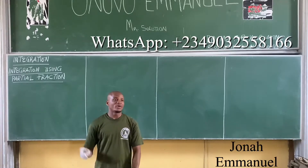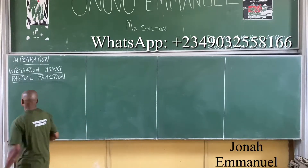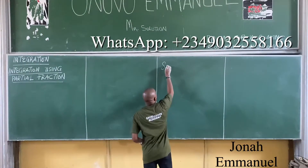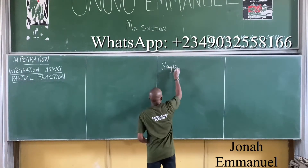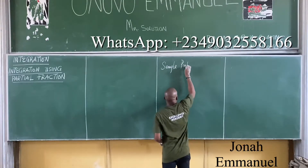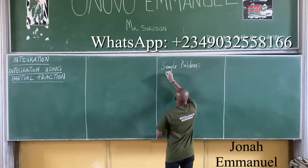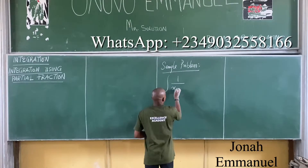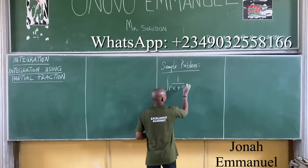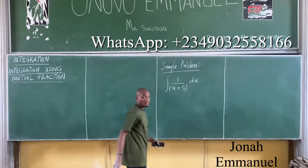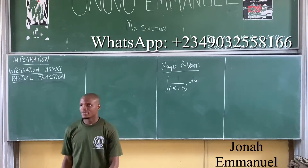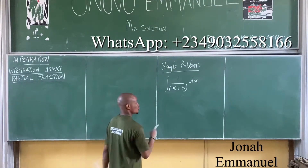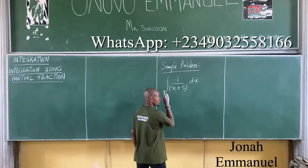Before we solve a problem on this, let me show you something. Sample problem — just something to do. If I have the integral of 1 over (x + 5) dx, which method do I use here? I will use substitution.